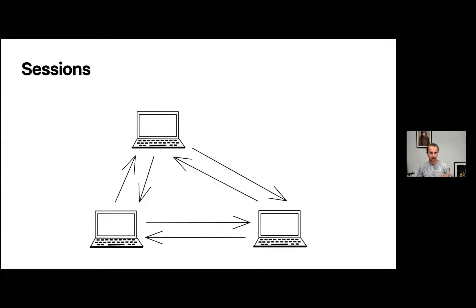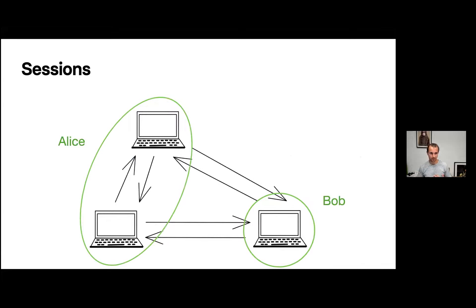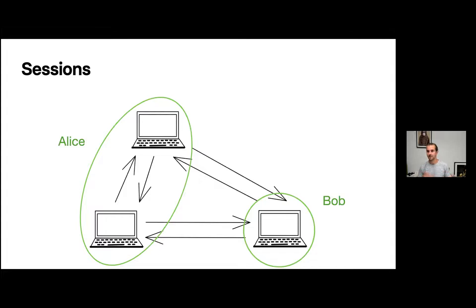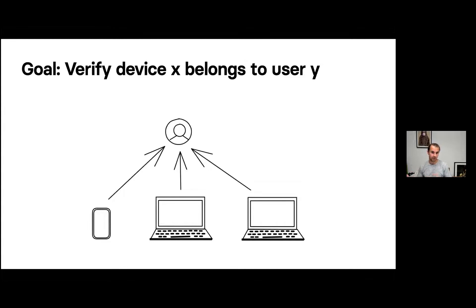There is one problem: we have this concept of devices, but a device usually belongs to a user. What if Alice owns two devices? You still want end-to-end encryption between them. From a UX perspective, I have an account and if I share a note with you, I don't want you to have to manually add each new device I create. So we need to verify that device X belongs to user Y, and that all those devices belong to this user.